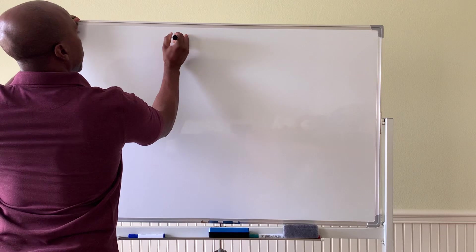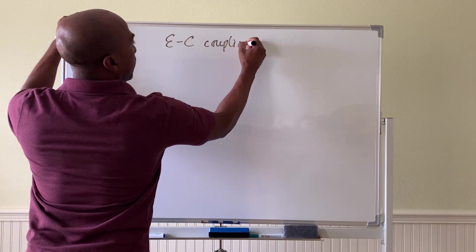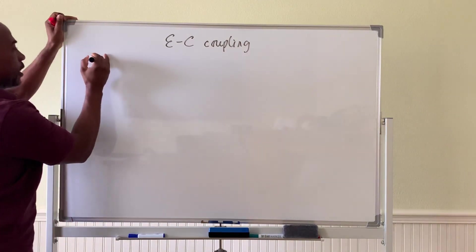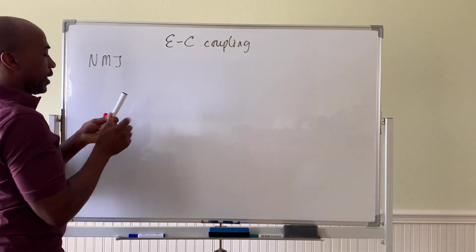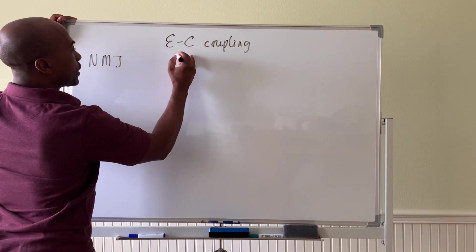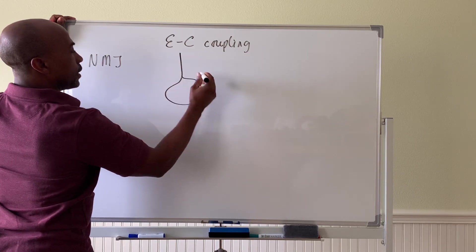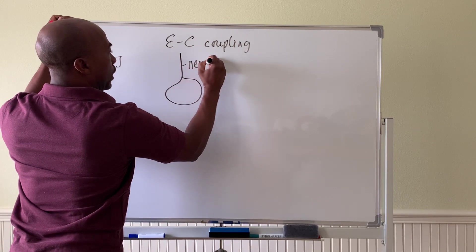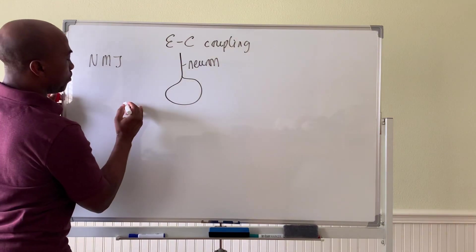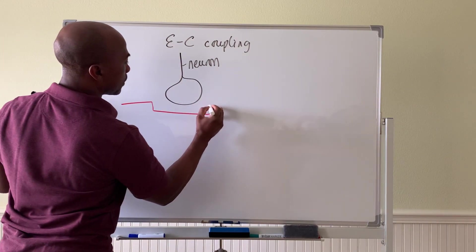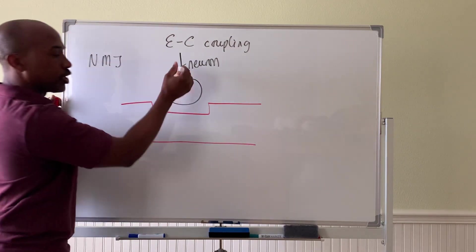Your excitation-contraction coupling occurs in the neuromuscular junction. If you remember, this is where each muscle cell—so here is a neuron coming to the muscle cell. That neuron will contact the muscle cell at what's called the neuromuscular junction, the NMJ.